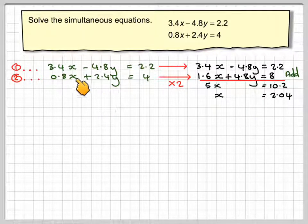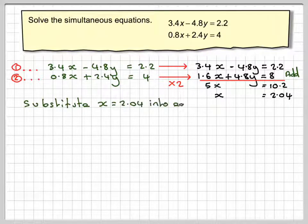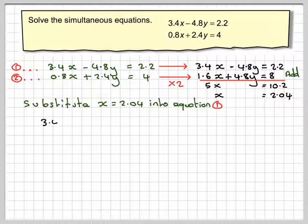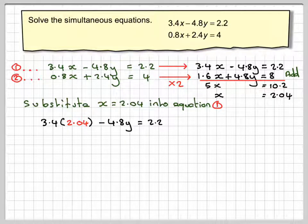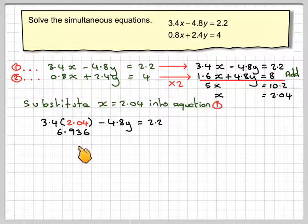Now we just substitute that back into equation 1. Perhaps now we use our calculator. So we're going to get 3.4 times x, which is 2.04, minus 4.8y equals 2.2. 3.4 times 2.04 is 6.936,